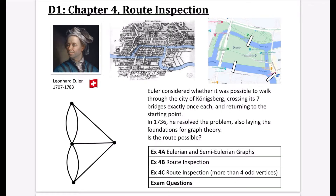Euler was a Swiss mathematician in the 18th century, born in 1707. It's all about this particular place called Königsberg, now called Kaliningrad in Russia. This town had seven bridges to a little island, and Euler considered whether it was possible to walk through the city crossing its seven bridges exactly once each and returning to the starting point. In 1736 he resolved this problem, also laying the foundations for graph theory.